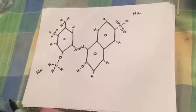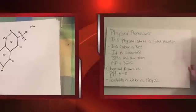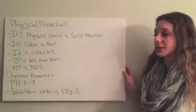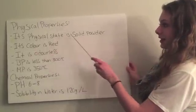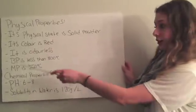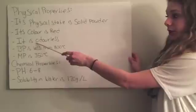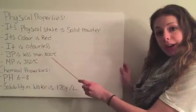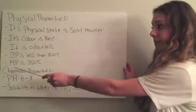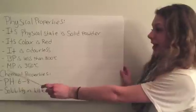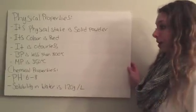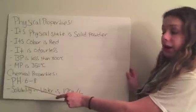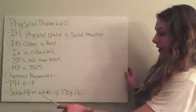It also has two sodium atoms that float around the molecule, which take part in the catalyst to help the molecule undergo a synthesis reaction. Some of the physical and chemical properties include: its physical state is solid powder, its color is red, it is odorless, it has a boiling point of less than 300 degrees Celsius, and a melting point of 350 degrees Celsius. Moving on to chemical properties, it has a pH between 6 and 8, and its solubility in water is 120 grams per liter.